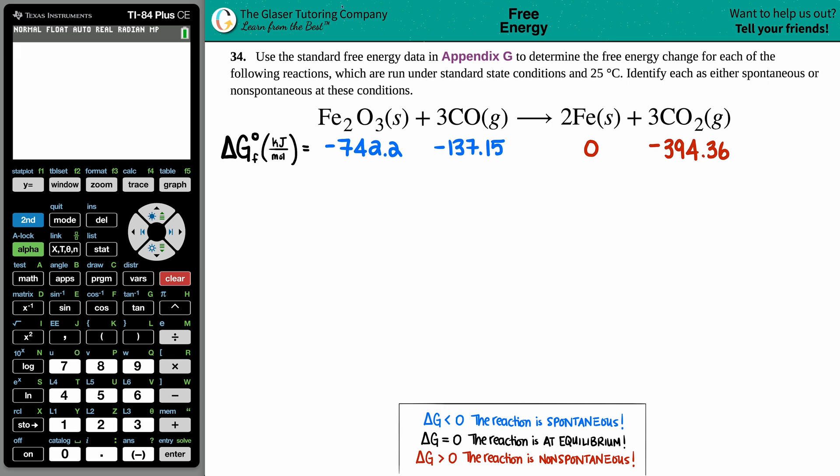Number 34: Use the standard free energy data in Appendix G to determine the free energy change for each of the following reactions, which are run under standard state conditions at 25 degrees Celsius. Then identify each as either being spontaneous or non-spontaneous at these conditions. The balanced equation we have is Fe2O3 solid plus 3CO gas yields 2Fe solid plus 3CO2 gas.